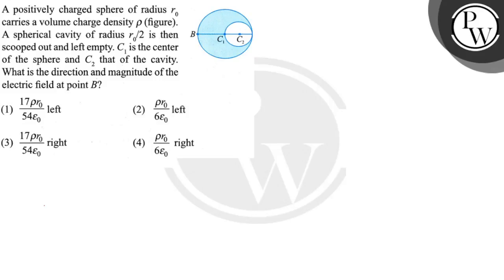Let's see this question. A positively charged sphere of radius r₀ carries a volume charge density ρ. A spherical cavity of radius r₀/2 is then scooped out and left empty. C₁ is the center of the sphere and C₂ that of the cavity. What is the direction and magnitude of the electric field at point B?